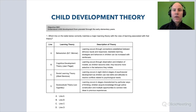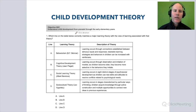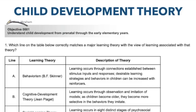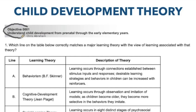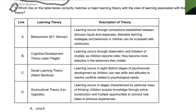We're going to start with a question involving early childhood development and theory. Take a moment and read over number one. This is an example of objective one on this test for the multiple choice, and it's testing your awareness of core ideas and theories in early childhood development. The question asks: which line on the table below correctly matches a major learning theory with the view of learning associated with the theory?